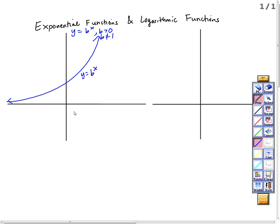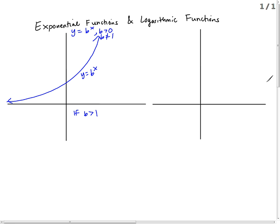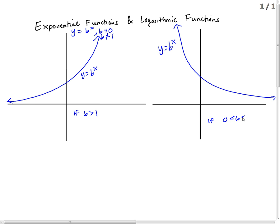y equal b to the x, this is if b is larger than 1. I can also graph an exponential function if b is less than 1 — it looks like this. This is y equal b to the x. Be very careful, though — when I say less than 1, it's less than 1 but still bigger than 0. So this is true if b is between 0 and 1; it's some sort of fraction or decimal.